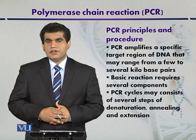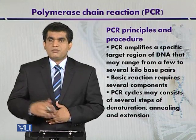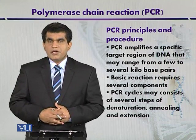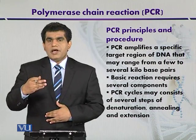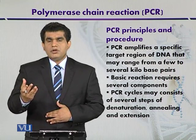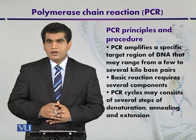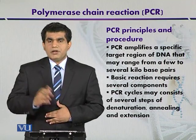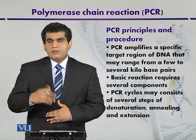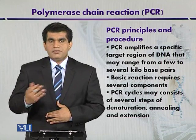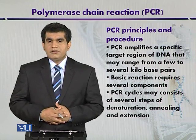Some cations in the form of divalent cations such as magnesium ions or manganese ions, and some monovalent cations like potassium ions, are also required in the reaction mixture. The reaction mixture is prepared in Eppendorf tubes of around 0.2 to 0.5 ml. The reaction volume can vary depending on our requirement — for example, 10, 25, 50, 100, or 200 microliters — depending on how much amplified DNA we need.